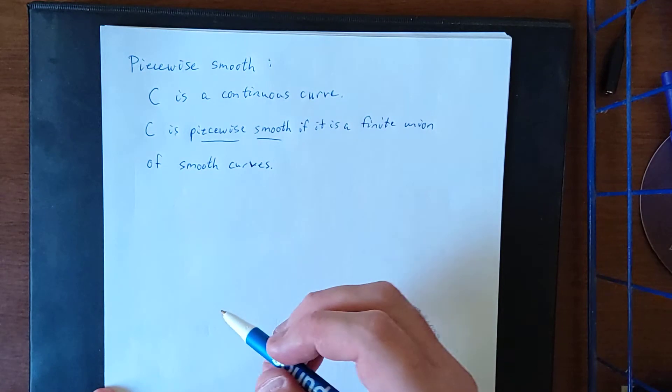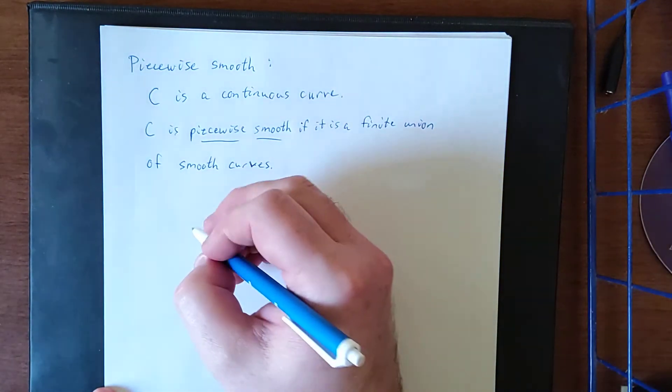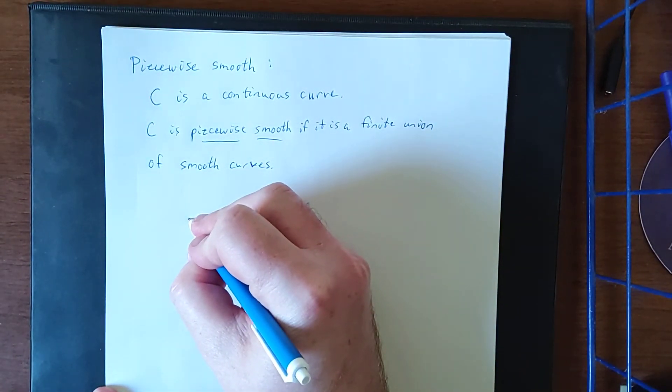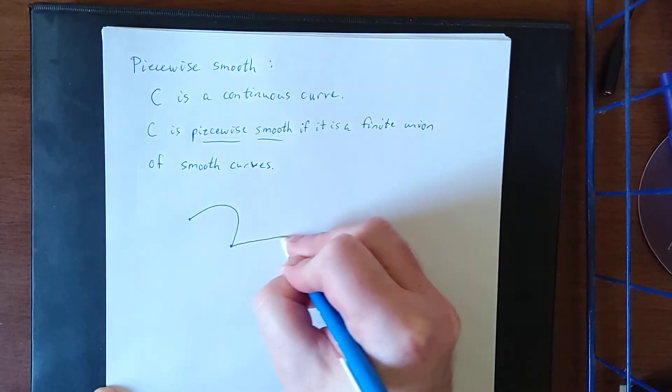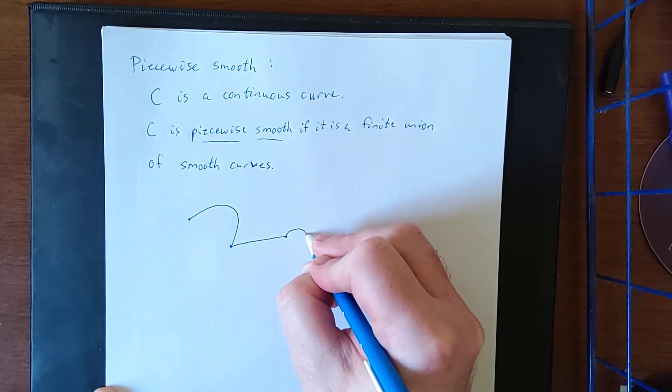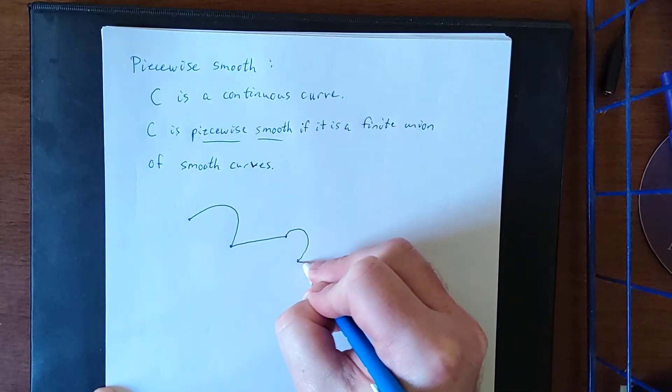So with that in mind, we've dealt with line segments, we've dealt with circles. Suppose that we have C that is comprised of this curve right here, followed by this line segment, followed by this curve, followed by this line segment.